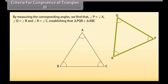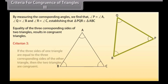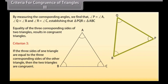By measuring the corresponding angles, we find that angle P is equal to angle A, angle Q is equal to angle B, and angle R is equal to angle C, establishing that triangle PQR is congruent to triangle ABC. This means that equality of the three corresponding sides of two triangles results in congruent triangles. Thus we have Criterion 3: if the three sides of one triangle are equal to the three corresponding sides of the other triangle, then the two triangles are congruent. This is referred to as SSS — side-side-side congruence rule.